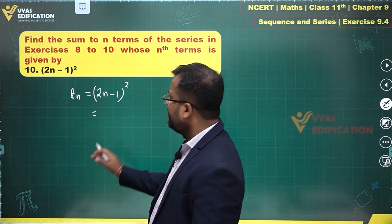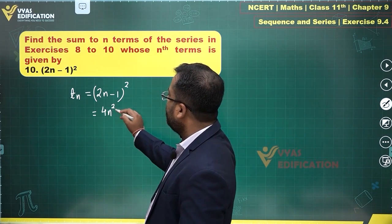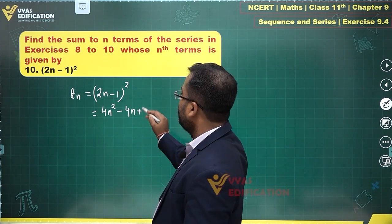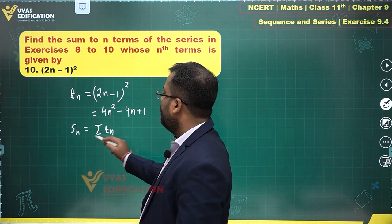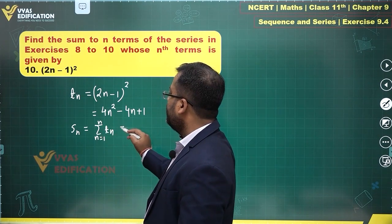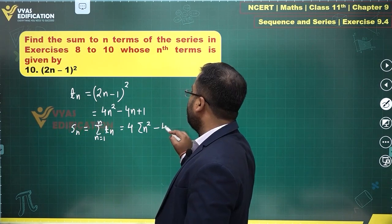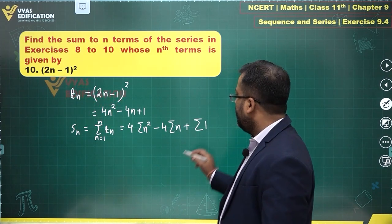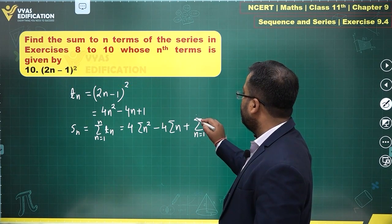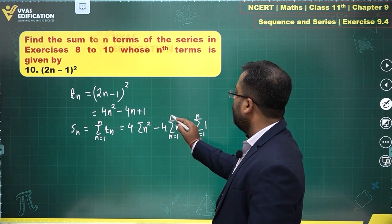First idea is a direct approach. You'll get 4n² - 4n + 1, and I can find Sn by writing Σtn from n=1 to n, which is 4Σn² - 4Σn + Σ1 from n=1 to n for each term.